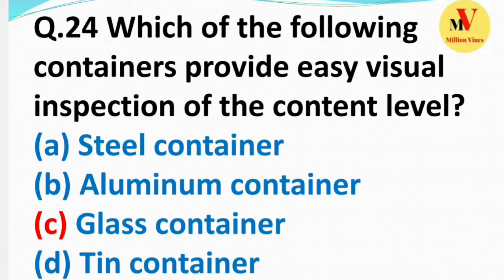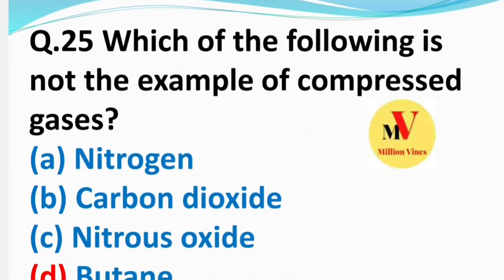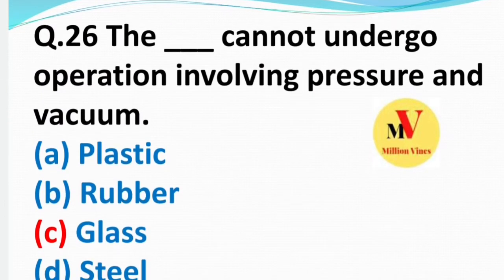The right answer is glass container. Next question: Which of the following is not an example of compressed gas? The right answer is D — butane is not a compressed gas.